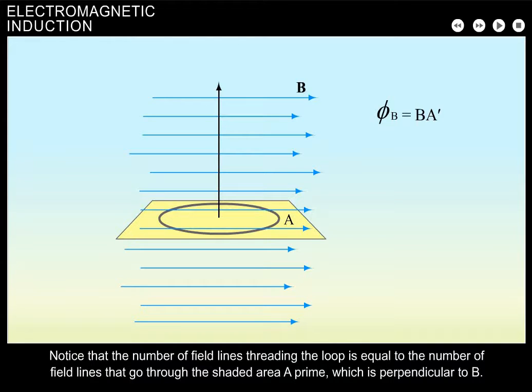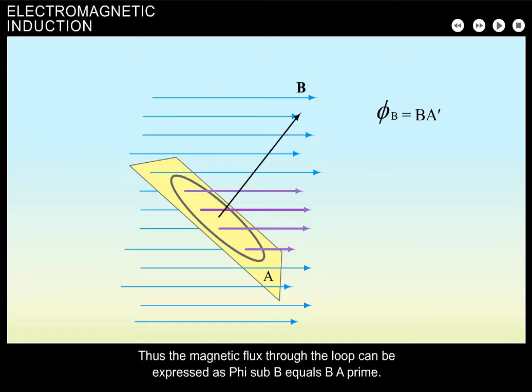Notice that the number of field lines threading the loop is equal to the number of field lines that go through the shaded area A prime, which is perpendicular to B. Thus, the magnetic flux through the loop can be expressed as phi sub b equals bA prime.